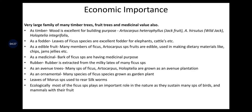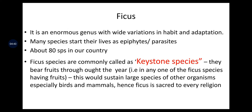Ecologically, most Ficus species play an important role in nature as they sustain many species of birds and mammals with their fruits. This Ficus tree is also known as a keystone species. It is an enormous genus with wide variations in habit and adaptation; many species start their lives as epiphytes or parasites on other trees. About 800 species are found in India, bearing fruits throughout the year, sustaining large numbers of other organisms. Hence, Ficus is sacred in every religion.